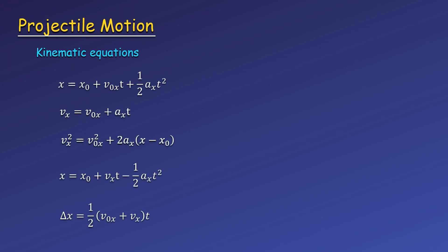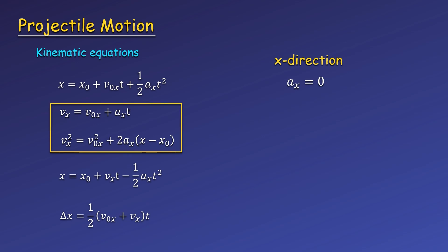I'll begin by writing all of these for the x direction. We can plug in our acceleration of zero into these equations. Looking at these two, the equations simplify, saying that the final velocity in the x direction is equal to the initial velocity in the x direction. This simply means that the x component of velocity isn't changing, which is exactly what it means to have no acceleration in the x direction.